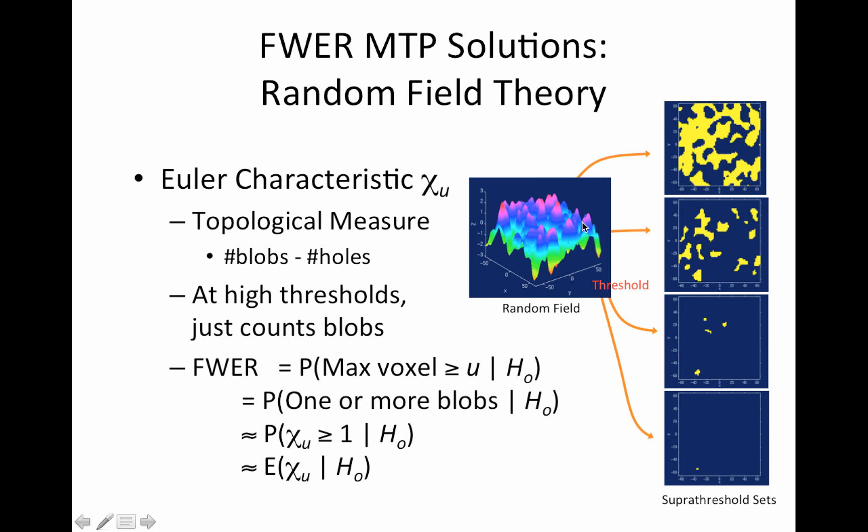So here this image is a slice of brain. And this topological map is representing the t statistic values over that slice. So here you have some positive ones. Here you have some negative ones.